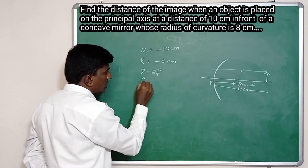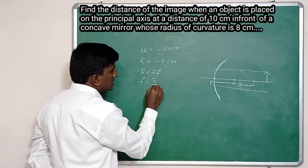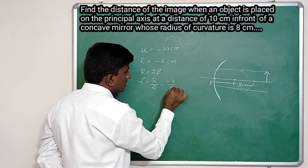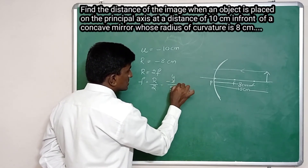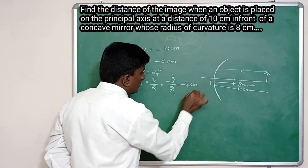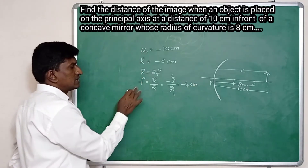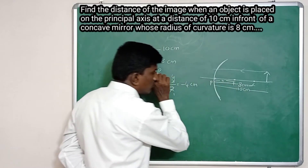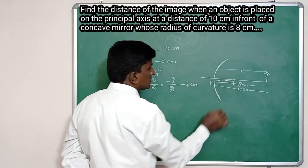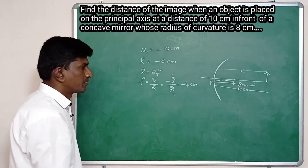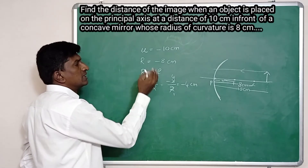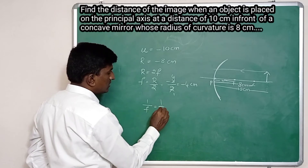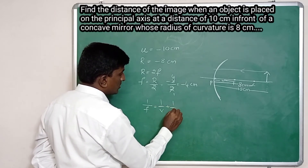We know that radius of curvature equals double the focal length, so focal length f equals R divided by 2, which is minus 8 divided by 2, giving minus 4 centimeters. So the focal length for this concave mirror is minus 4 centimeters. We need to calculate the distance of the image using the mirror formula: 1 by f equals 1 by v plus 1 by U.